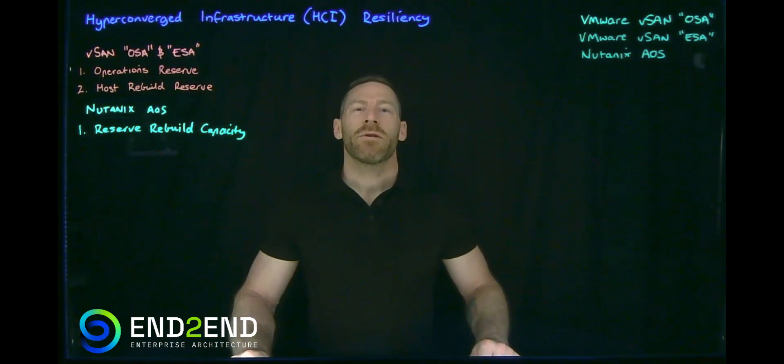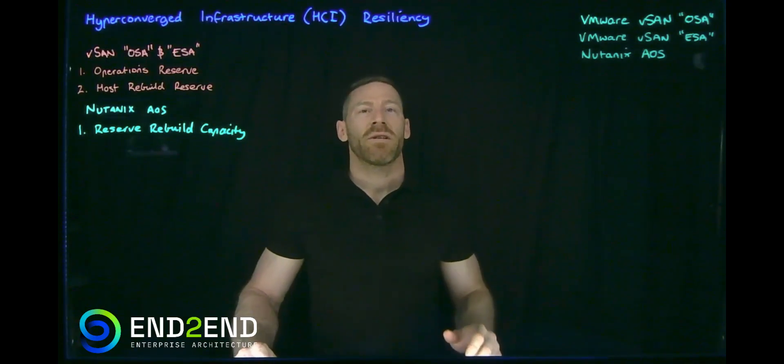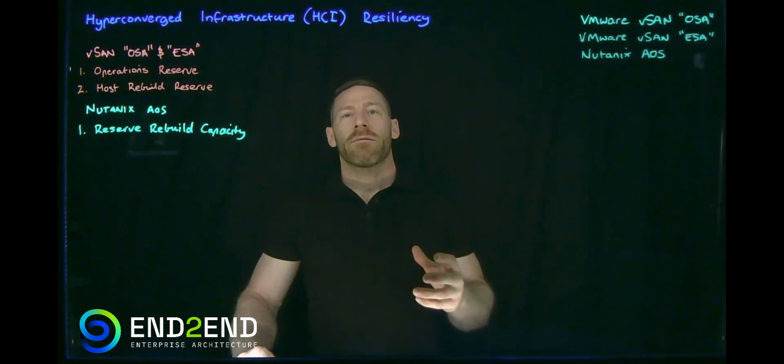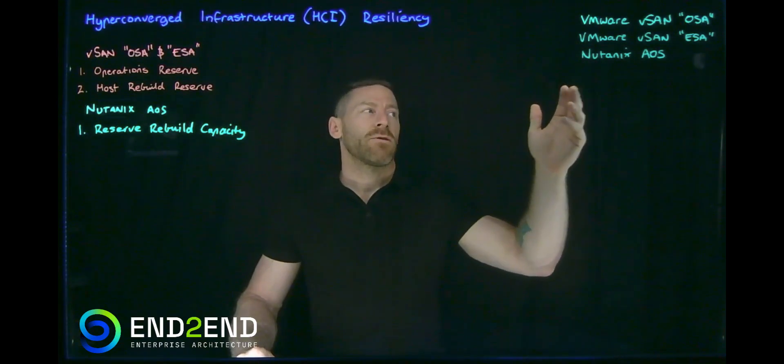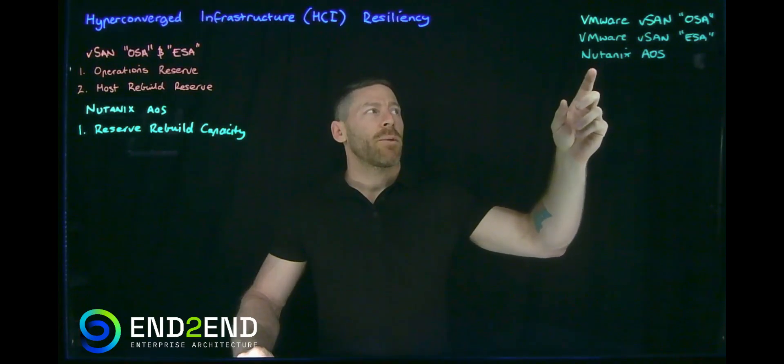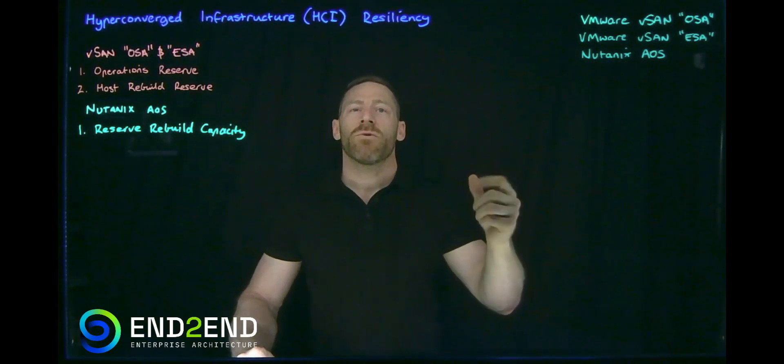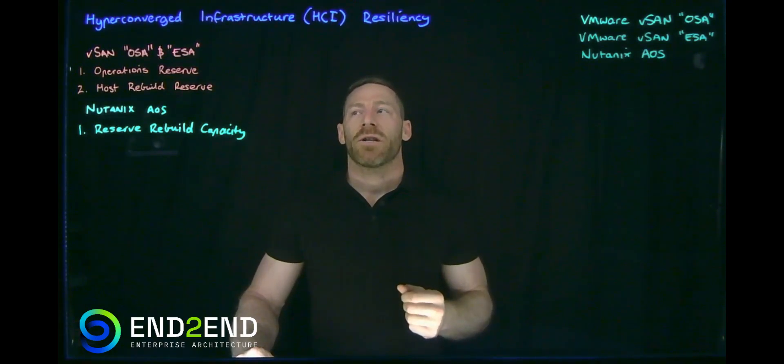Hi and welcome to this Lightboard series video. Today we're going to talk about hyper-converged infrastructure resiliency. We're going to talk about the two leading products in the market, which is VMware vSAN as well as Nutanix AOS. We're also going to cover the two different architecture types of vSAN, which is the original storage architecture and now the latest and greatest express storage architecture.